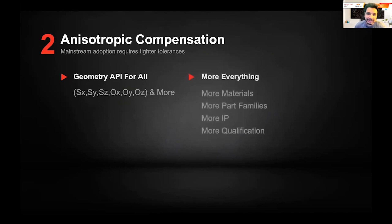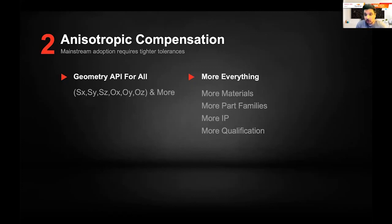What does this mean? It means more materials, more part families, more printer companies and ISVs generating IP, and quite honestly faster qualification. The idea is we're trying to build the tools to fundamentally accelerate how quickly people can develop sophisticated strategies. It's our goal to essentially be the best mathematicians in the room and enable every single one of our partners to generate more and more IP to run their machines to the limit.